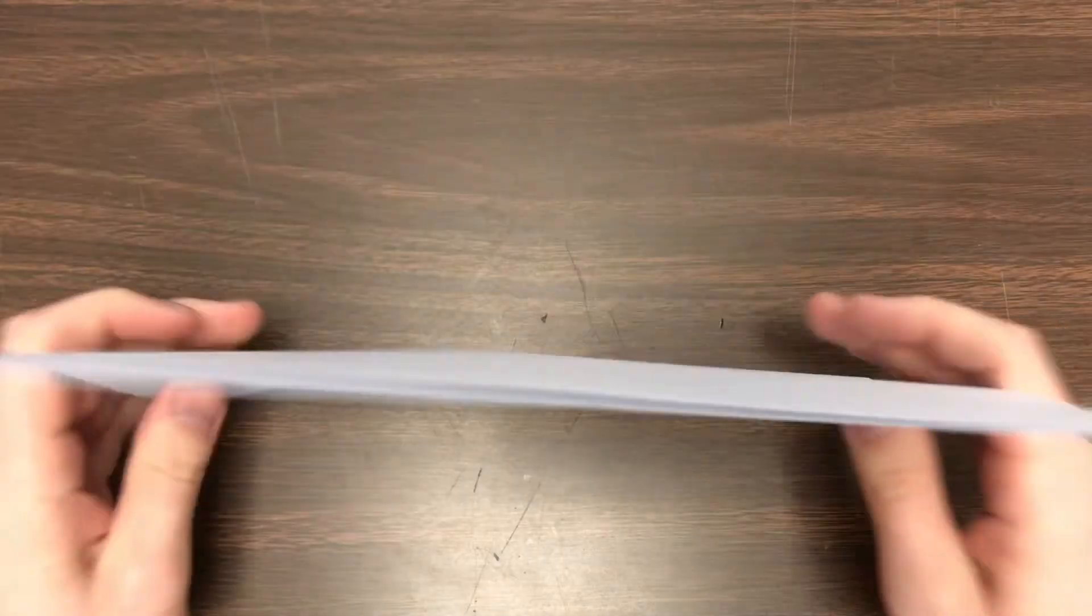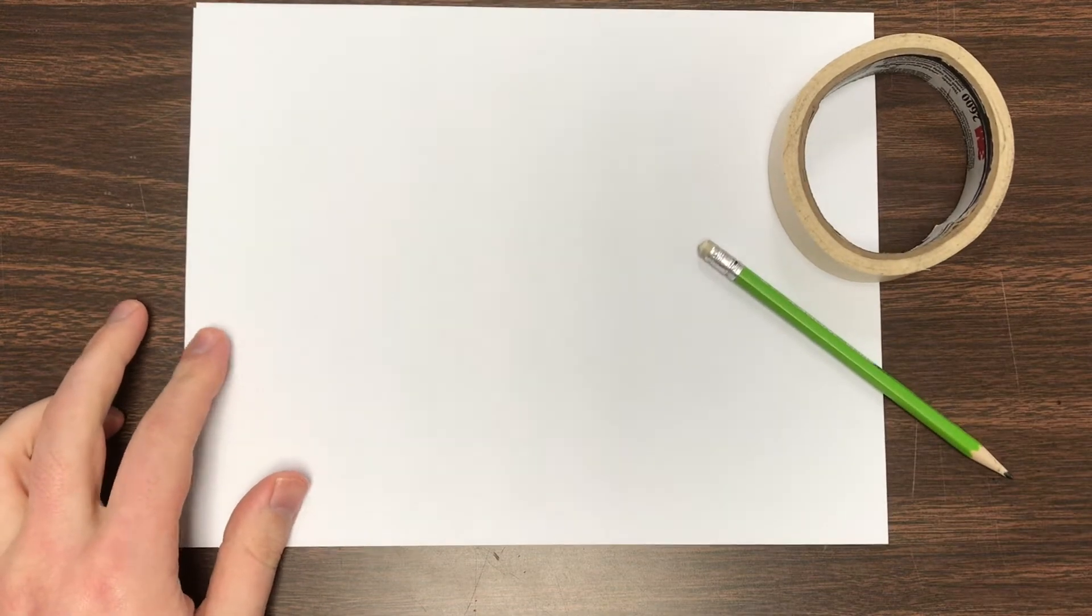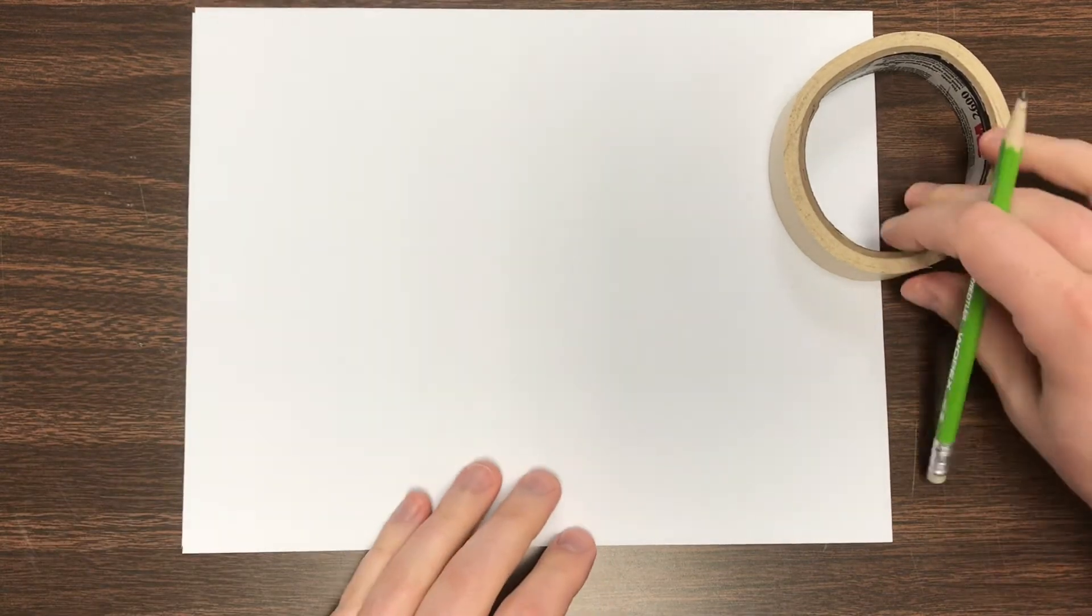Today we are going to be doing some blind contour line drawings of our hands. What you're going to need is two sheets of paper, some tape, a pencil, and a timer. You could use the timer on your phone or a kitchen timer, microwave, anything will work as long as you can hear it.